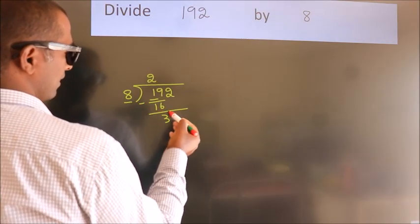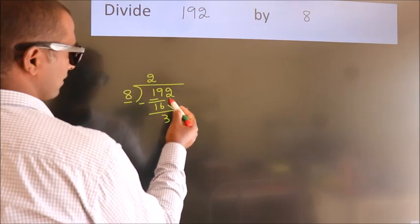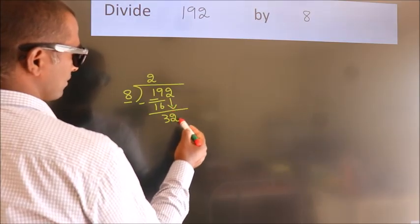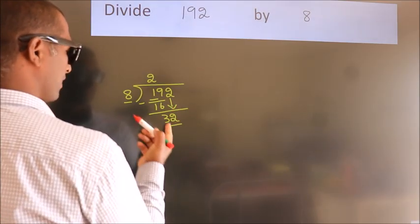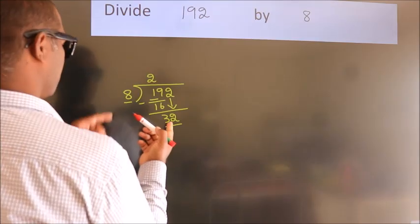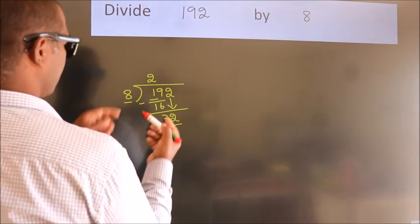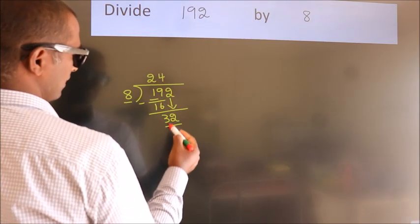After this, bring down the beside number. So 2 down. So 32. When do we get 32 in the 8 table? 8 fours, 32.